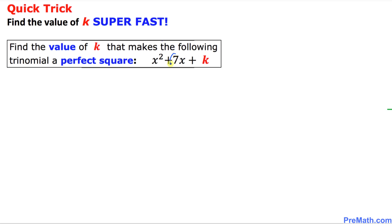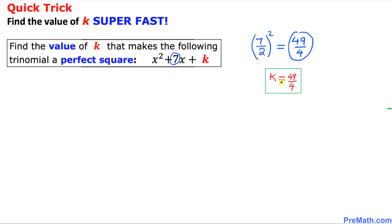Here is our next example. Let's focus on the coefficient of x, which is positive 7. Divide it by 2 — that is going to give us 7 over 2. And then we simply square it, which gives us 49 over 4. Thus k equals 49 over 4 is our final answer.